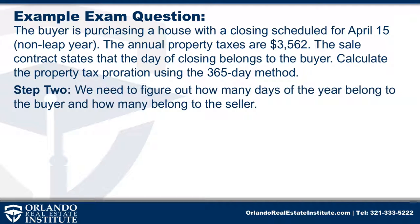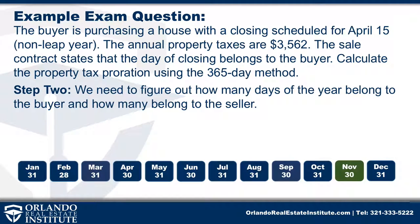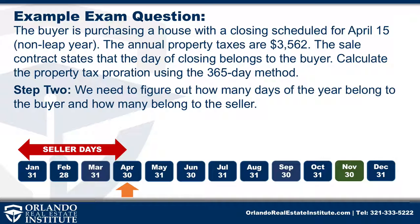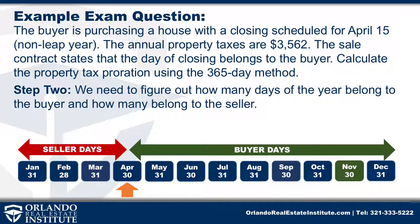Next, we need to figure out how many days belong to the seller and how many days belong to the buyer. Remember, November is when that tax bill comes due, and in April — April 15th — is the closing date. So the seller is going to live in the home from January 1st through April 14th, because it says in the question the day of closing belongs to the buyer. Then from April 15th through the end of the year, that's going to be your buyer days. To figure out seller days, take 31 plus 28 for February, plus 31 for March, and then the first 14 days of April — remembering the 15th belongs to the buyer — that gets us 104 days.